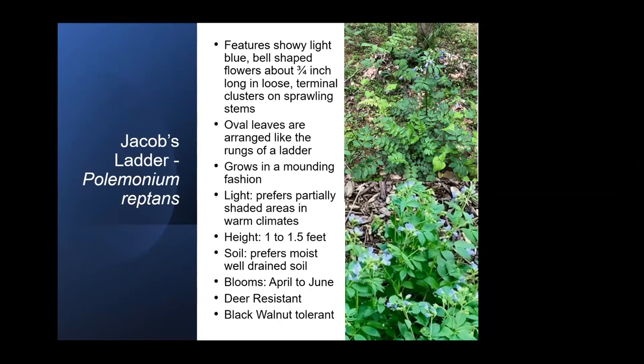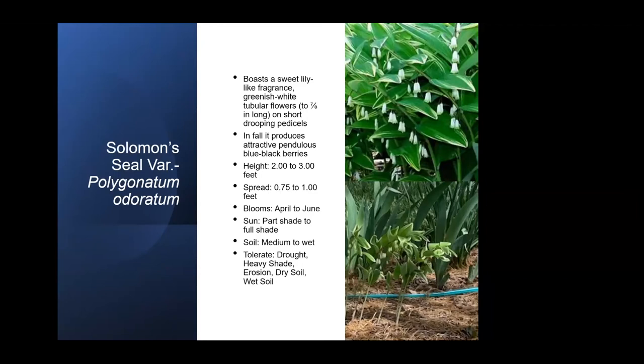Solomon's seal is another sweet plant with a sweet lily-like fragrance. It has blooms in spring and berries in fall. It's good for a variety of soil conditions, but when you plant it, for the nicest appearance you should plant it so all the fronds are going in the same direction — otherwise it looks a little funky, like a cowlick.